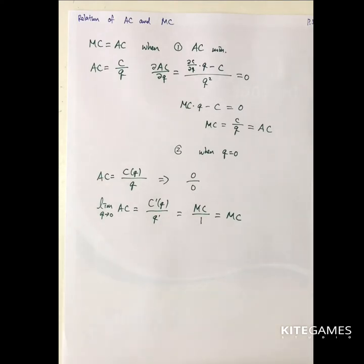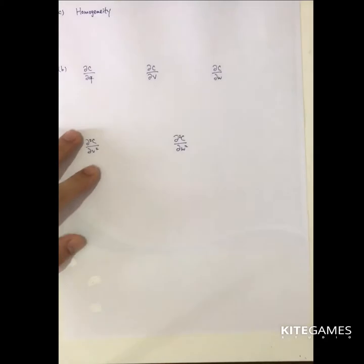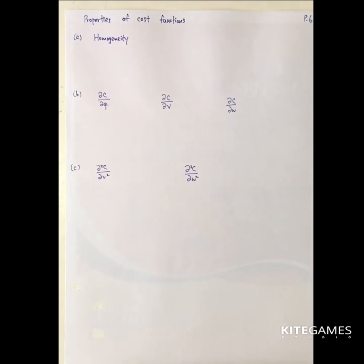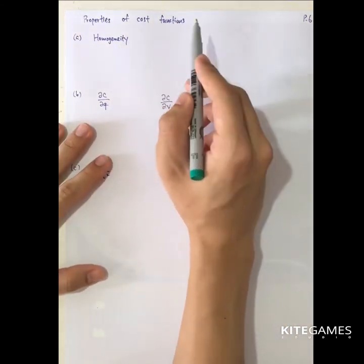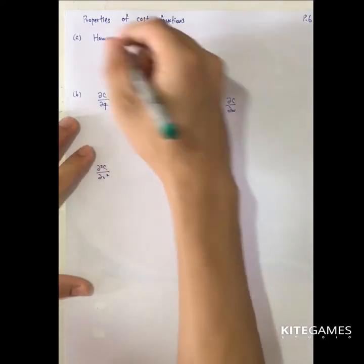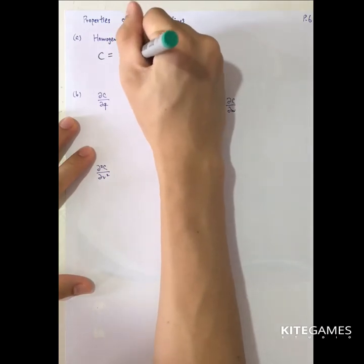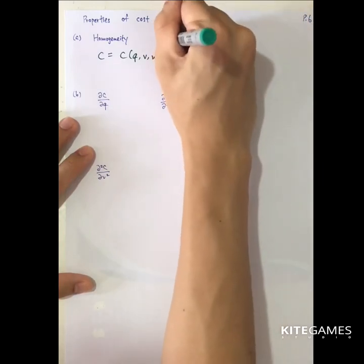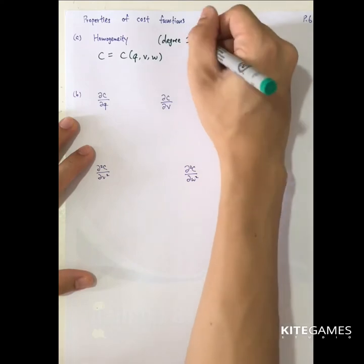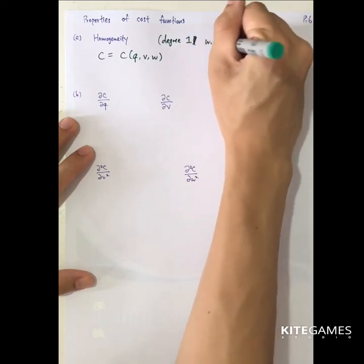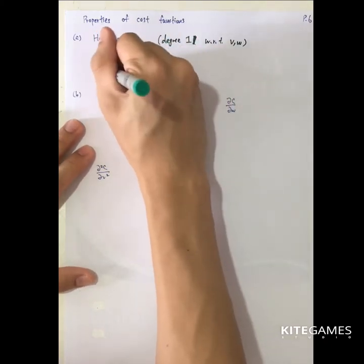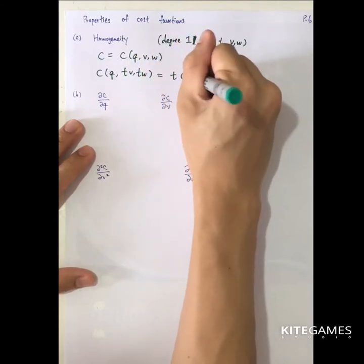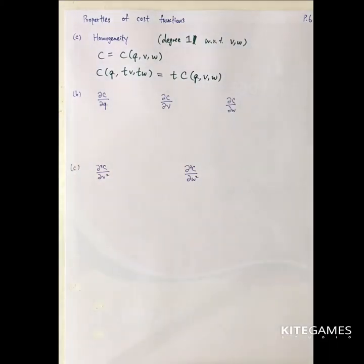Next, we'll talk about some basic properties of the cost function. We have introduced the total cost, marginal cost, and average cost — they share some properties. The first is homogeneity. The total cost function C is a function of Q, V, and W, and it is homogeneous of degree one with respect to input prices V and W only. So if we multiply V and W by T, this is exactly equal to T times C as a function of Q, V, and W.